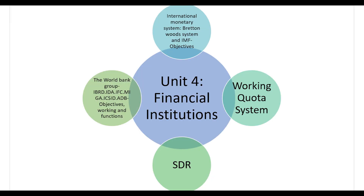Next is unit 4, that is financial institutions. The first topic is the international monetary system. This includes the Bretton Woods system and IMF objectives, working, quota system, and SDR. The next is the World Bank group.